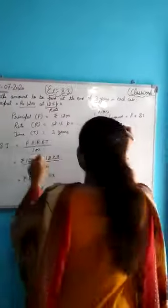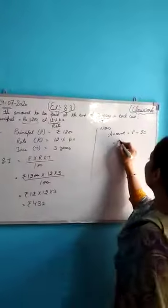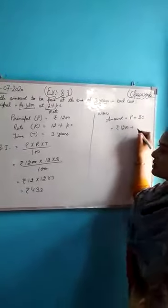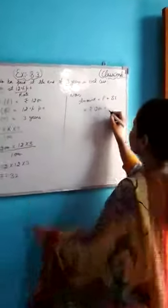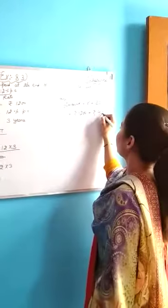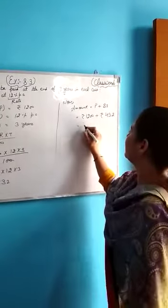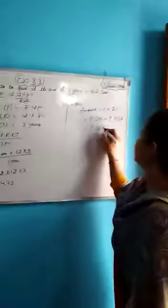The value of principal is 1200, so write down rupees 1200 here plus simple interest. The value of simple interest is rupees 432. Now add it. What will you get? You will get 1632.